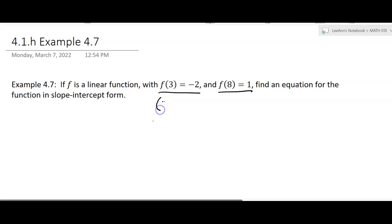We're going to treat this as (3, -2), because this is your input, this is your output, so that's one ordered pair, and then this ordered pair is going to be (8, 1). Again, your input, your output.